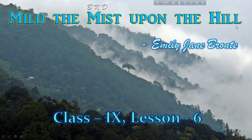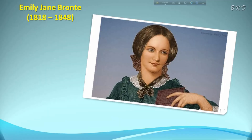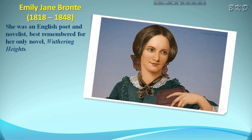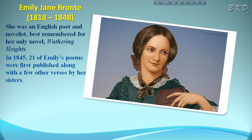Welcome, students. Today we shall read Lesson 6: 'Mild the Mist Upon the Hill' by Emily Jane Brontë. Emily Jane Brontë was born in 1818 and died in 1848. She was an English poet and novelist, best remembered for her only novel, Wuthering Heights. In 1845, 21 of Emily's poems were first published along with verses by her sisters.